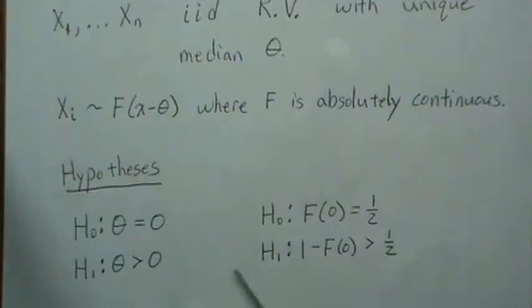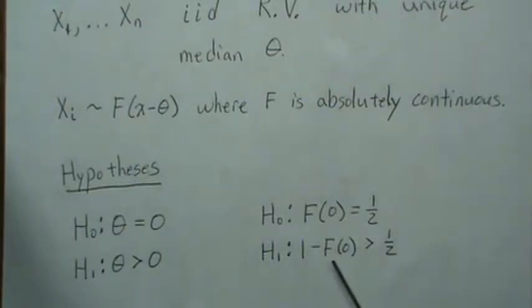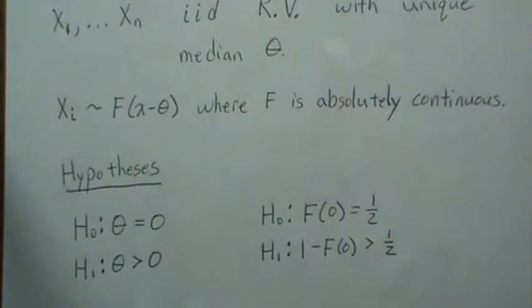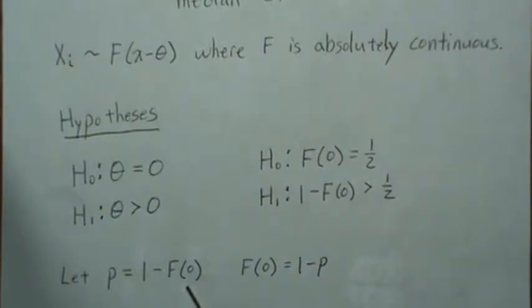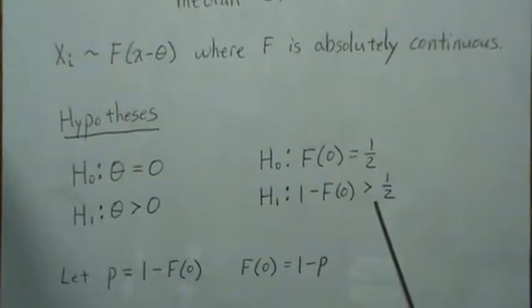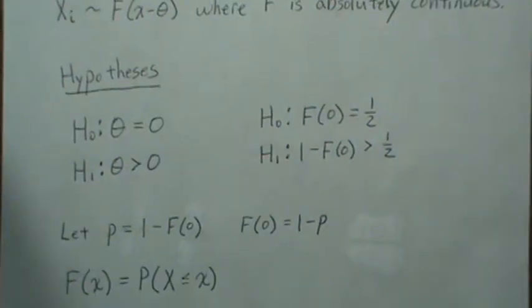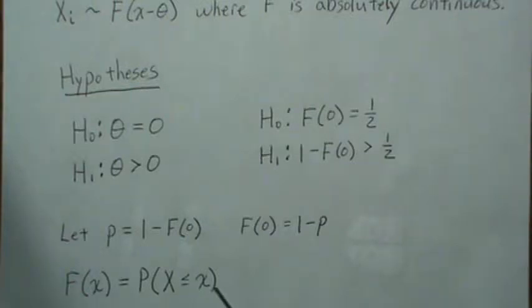If the median is shifted to the right, then 1 - F(0) is greater than 1/2 — or equivalently F(0) is less than 1/2 — but we write it the first way so the signs are consistent. Now we develop some notation. We let p = 1 - F(0). Under the null, p = 1/2; under the alternative, p > 1/2. And then F(0) = 1 - p by back-solving.